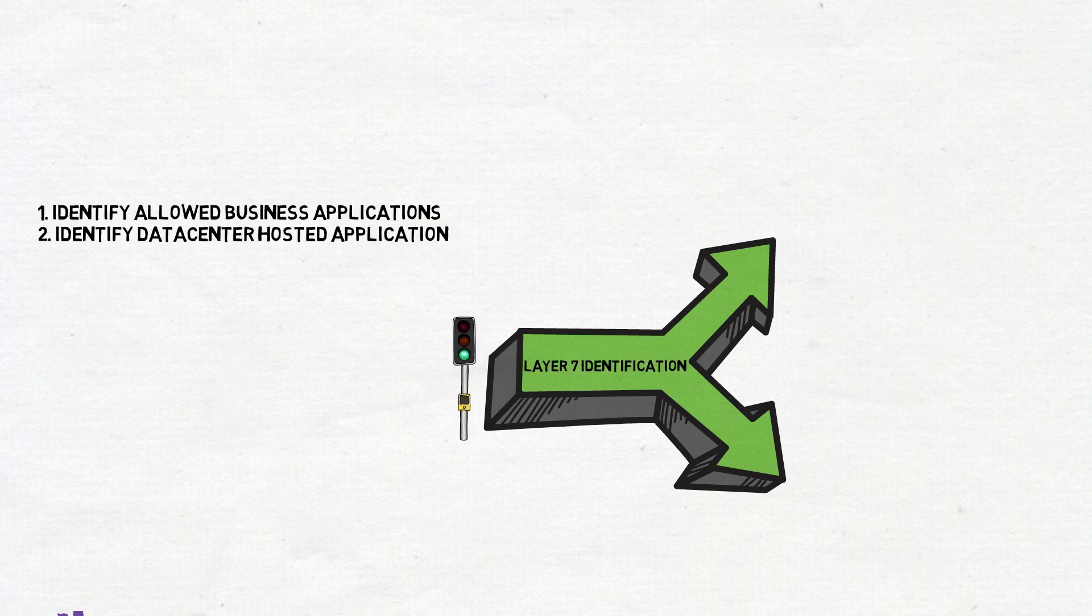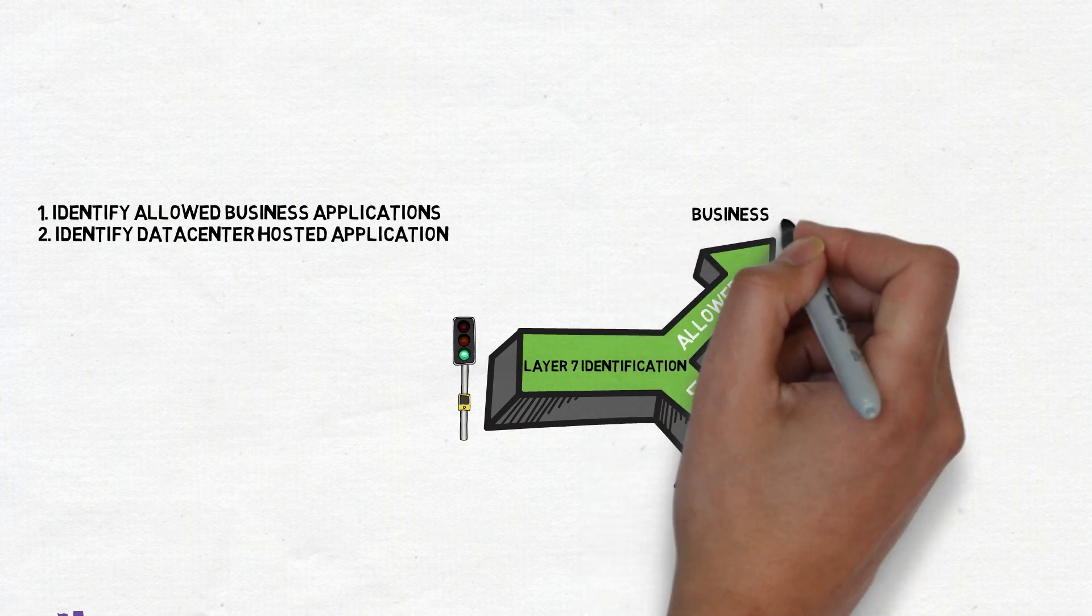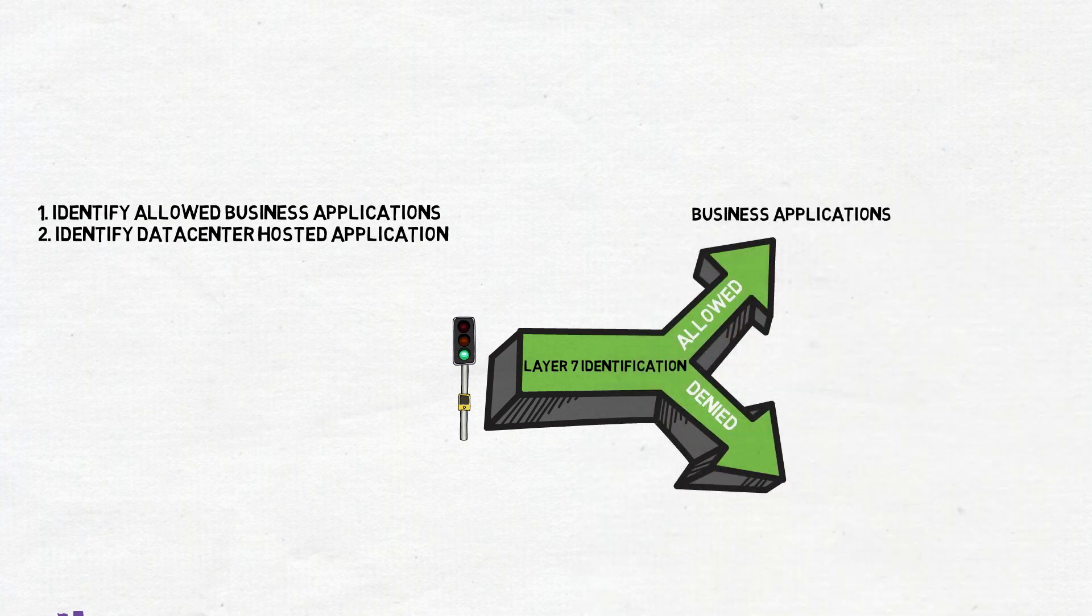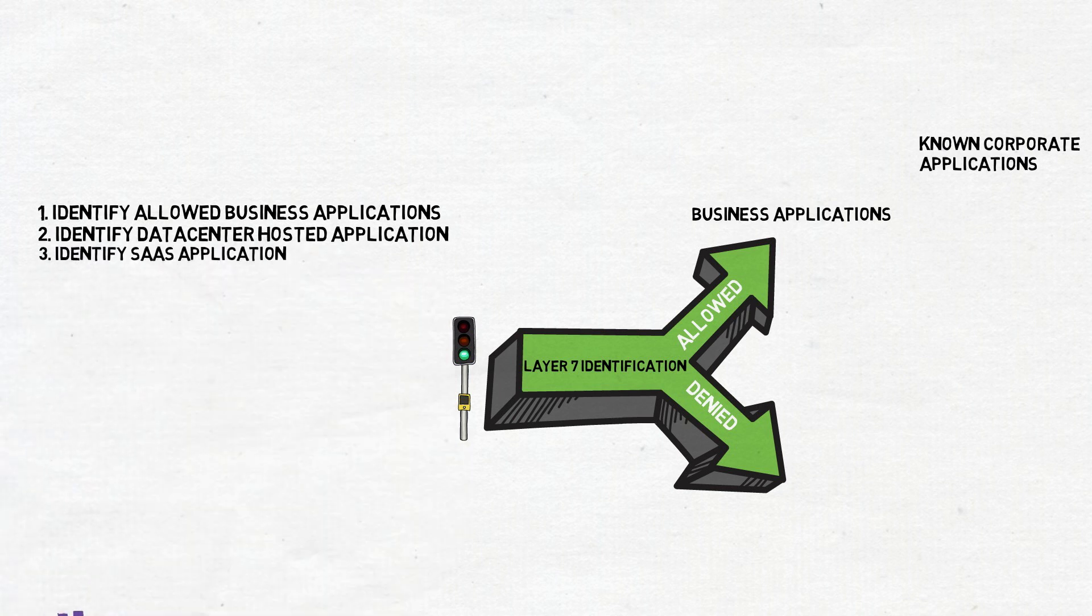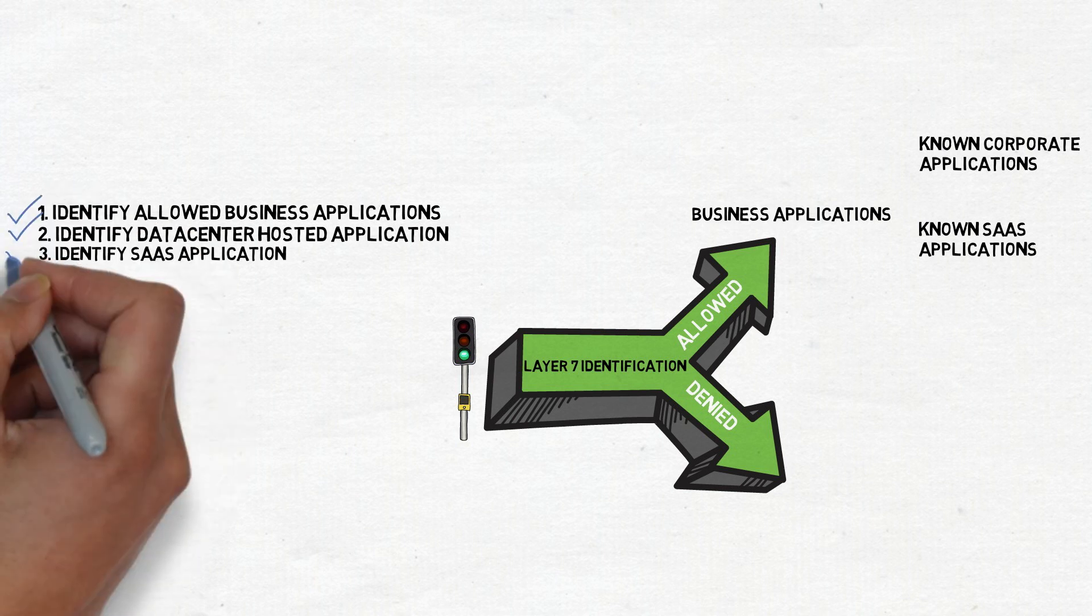Next, identify which of these applications need to be backhauled to your cloud or data center. These will be called known corporate applications. For applications that use a direct internet connection, let's call them known SaaS applications. For business continuity, it's critical that these applications always work at all times through redundant paths.